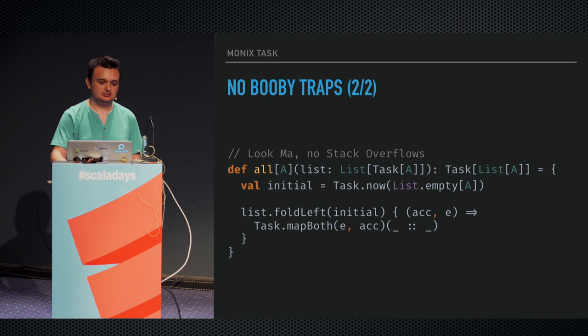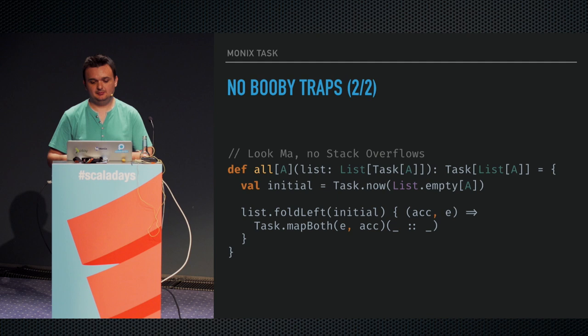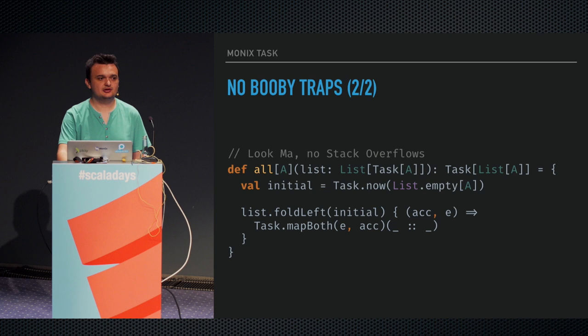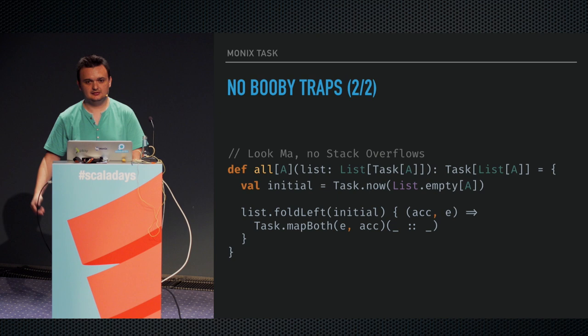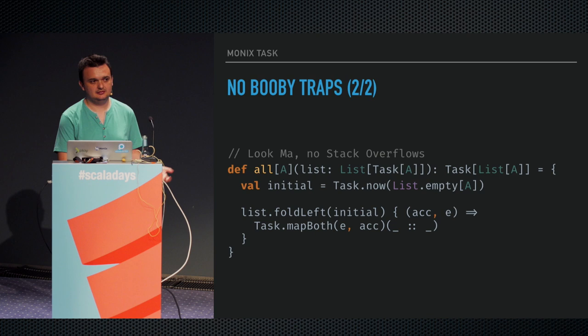Another operation that has been problematic is the mapBoth implementation, which executes tasks in parallel — like the applicative map2, but executing in parallel. The mapBoth implementation in Monix can be used in loops without stack overflow concerns. This is a loop equivalent to Future.sequence in Scala that takes a list of tasks and returns a task of list, implemented in terms of mapBoth. This particular operation is called gather — you do Task.gather and it triggers parallel execution of the list of tasks you give it.